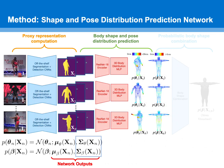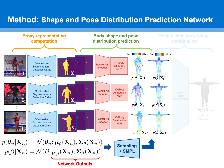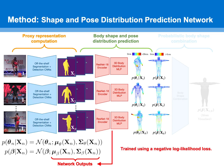Uncertainty over SMPL parameters can be propagated to uncertainty over SMPL vertices by passing samples from the predicted distributions through the SMPL function and computing per-vertex position variance. The distribution prediction network is trained using a negative log-likelihood loss.